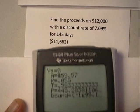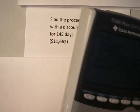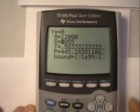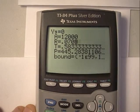Okay, so I have a final value of $12,000. I have an interest rate of 7.09, that's .0709.